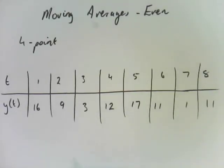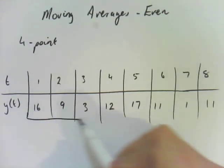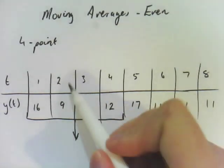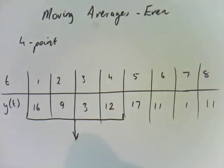Even point moving averages are very similar to odd point moving averages, but there's actually a second step, because if you find the average of these four points, you'll notice that the center actually comes out in between two and three. So there's actually a two-step process here.